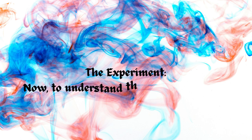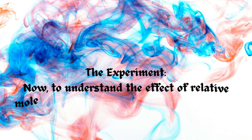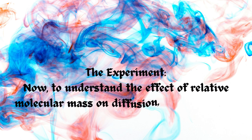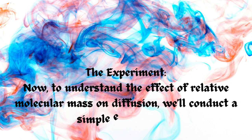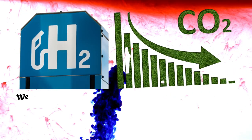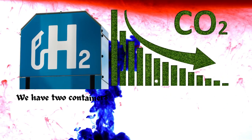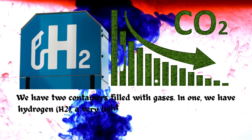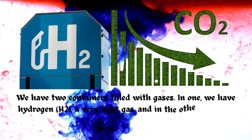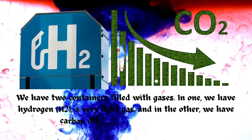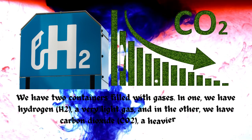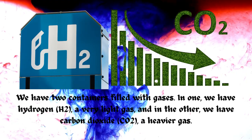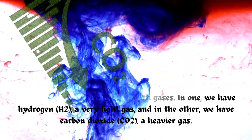The experiment. Now, to understand the effect of relative molecular mass on diffusion, we'll conduct a simple experiment. We have two containers filled with gases. In one, we have hydrogen, H2, a very light gas, and in the other, we have carbon dioxide, CO2, a heavier gas.